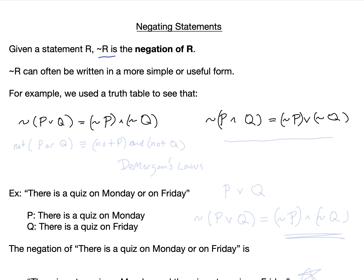For example, we use truth tables to see that not (p or q) is equivalent to not p and not q. Similarly, we saw that not (p and q) is equivalent to not p or not q.